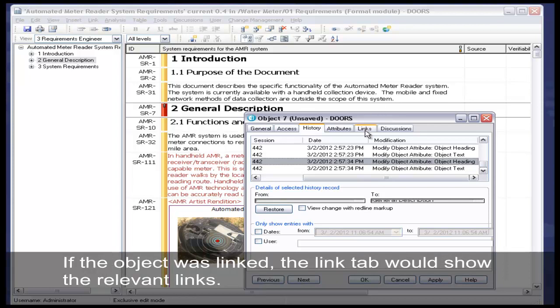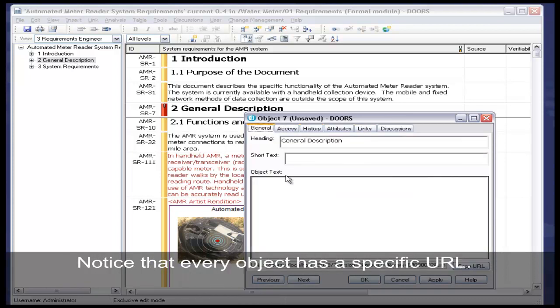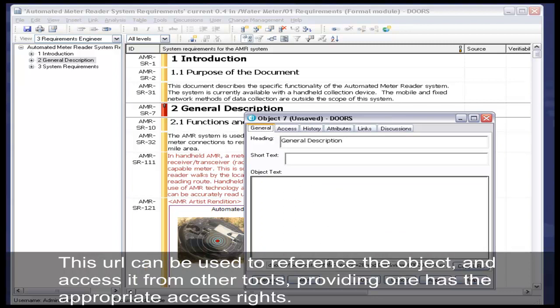If the object was linked, the Links tab would show the relevant links. Notice that every object has a specific URL. This URL can be used to reference the object and access it from other tools, providing one has the appropriate access rights.